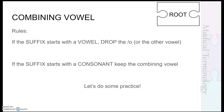Now let's talk about how we put roots and suffixes together for spelling purposes. If the suffix starts with a vowel — A, E, I, O, or U — you are going to drop that combining vowel before combining the two terms. If the suffix starts with a consonant, any non-vowel, you are going to keep that combining vowel. The reason is both visual correctness and easy pronunciation — we don't want to stack two vowels or too many consonants together.